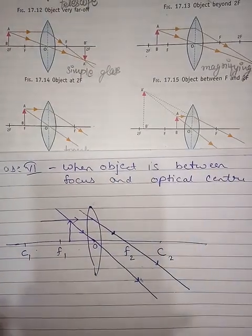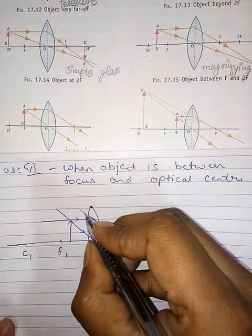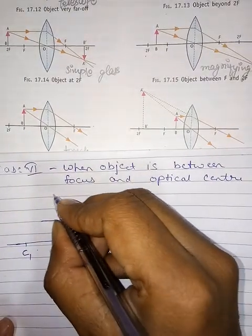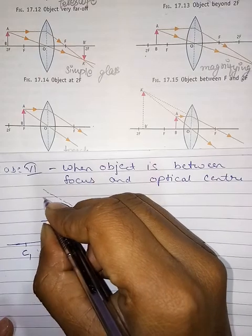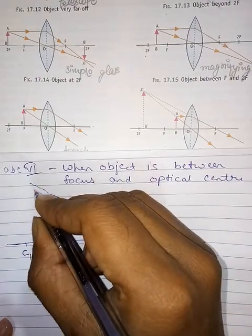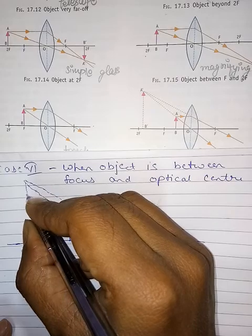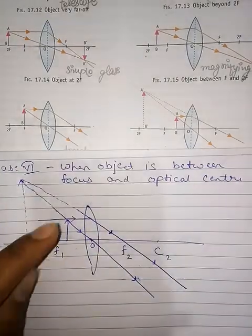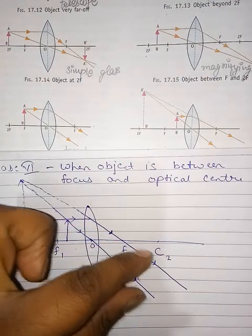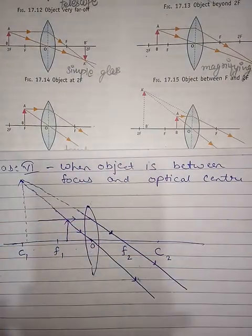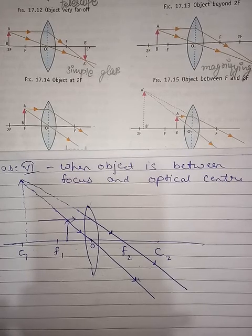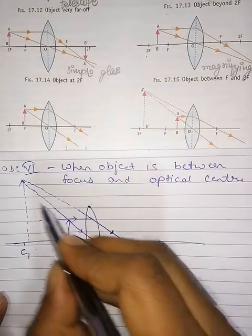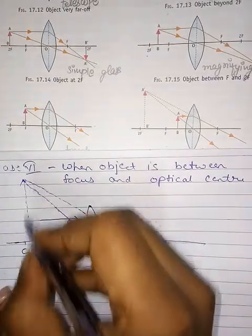इस case में image on the same side of the lens form करेगा। Virtual image बनेगा। यह image — अगर light ray को पीछे proceed करें — तो यहाँ पर form करेगा। Originally the light rays are being separated आगे, इसलिए real image form नहीं करेगा, virtual image form करेगा।